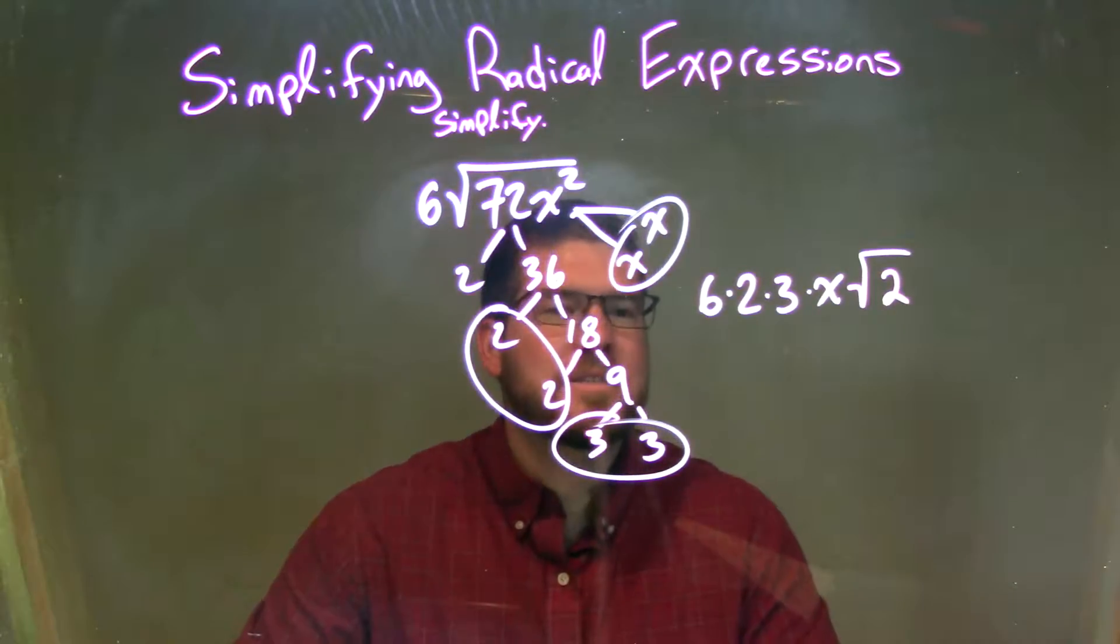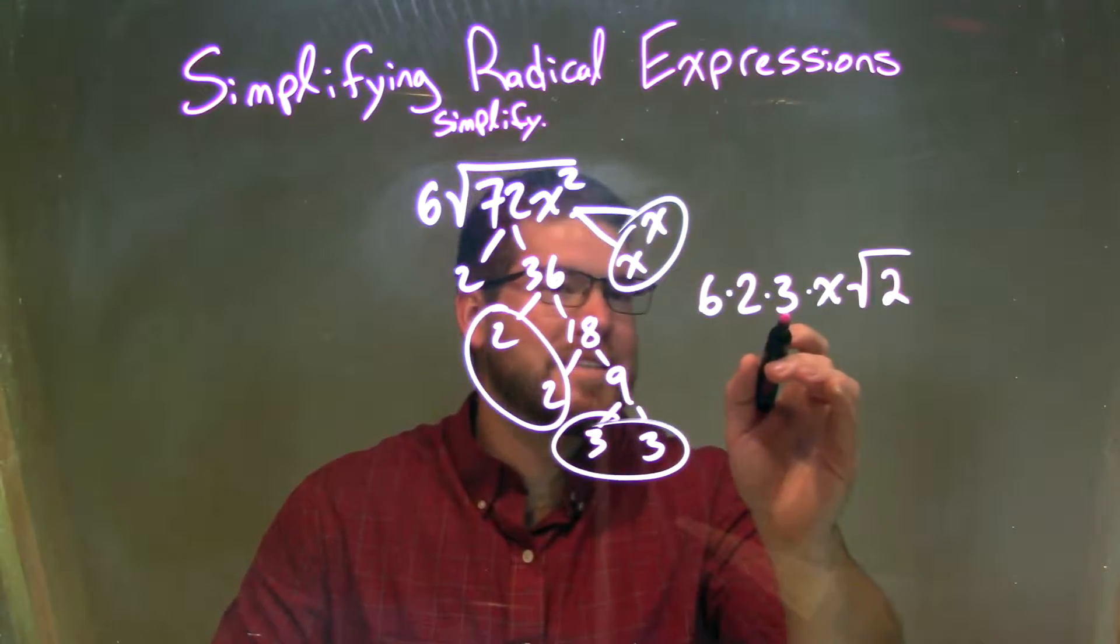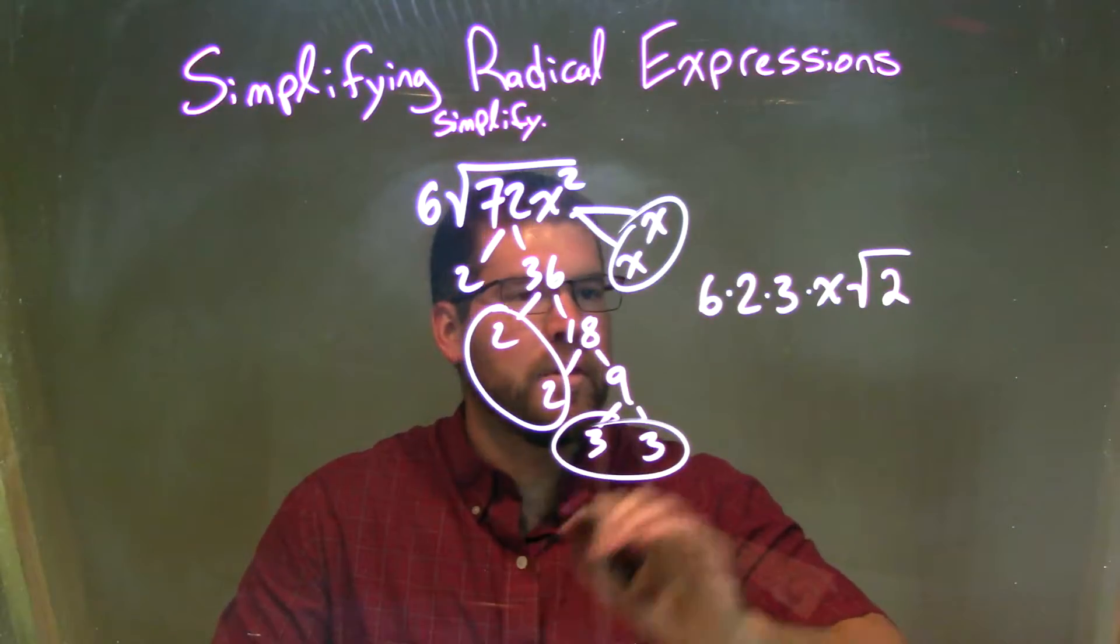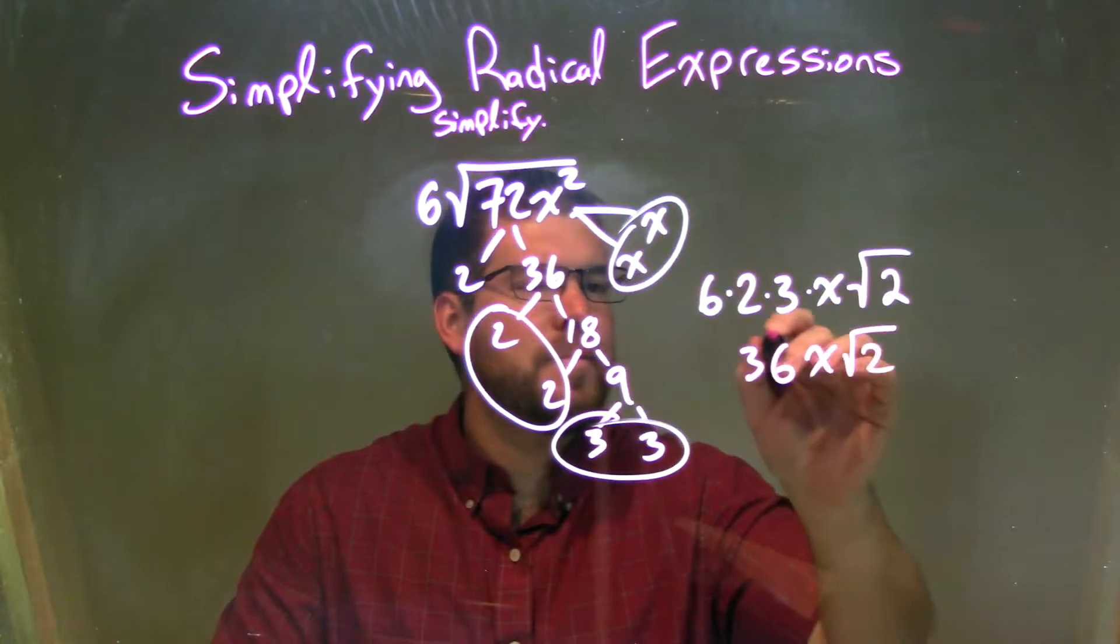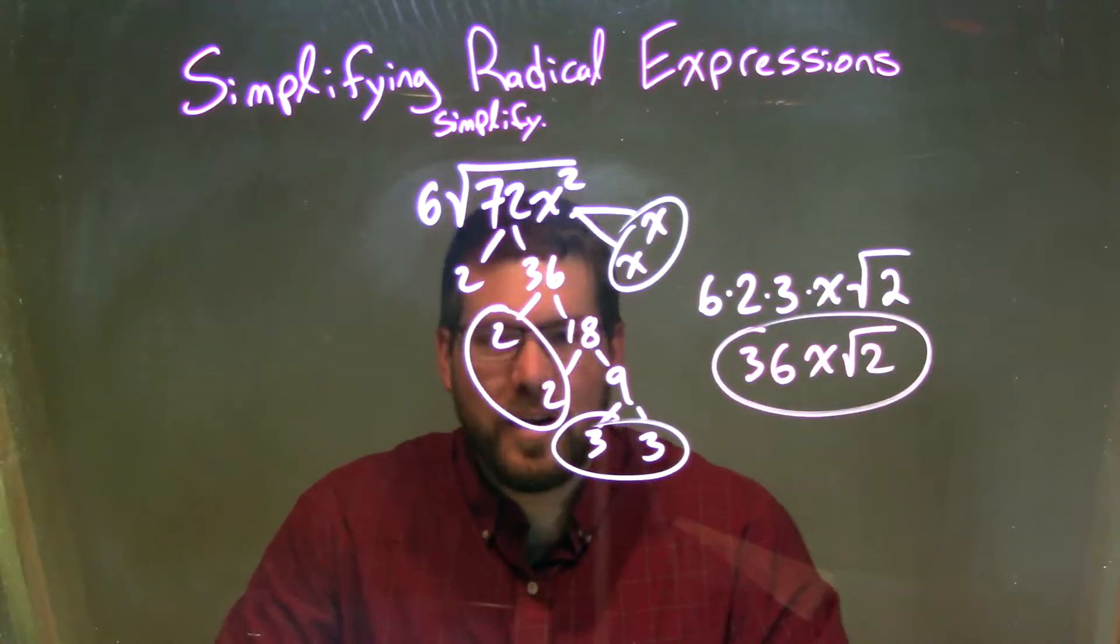So now we need to simplify. 2 times 3 is 6. 6 times 6 is 36. So we have 36 right there, x times the square root of 2, and that is our final answer.